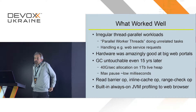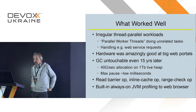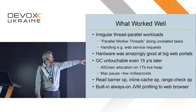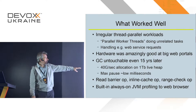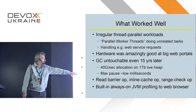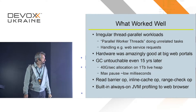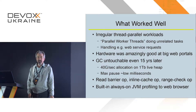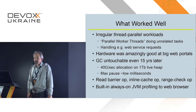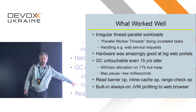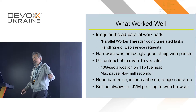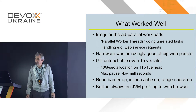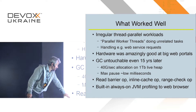What worked well? The irregular thread parallel workloads — we found we could actually run them in parallel fairly well. The hardware was amazingly good at running big web portals. The GC also worked fabulously well. At that era, on a terabyte live heap, we'd handle 40 gigs allocation per second with max pause in the low millisecond range — which you can't hardly get out of an x86 from Oracle today using their best GC. The current Azul collector has this down to the low microsecond range for max pause.